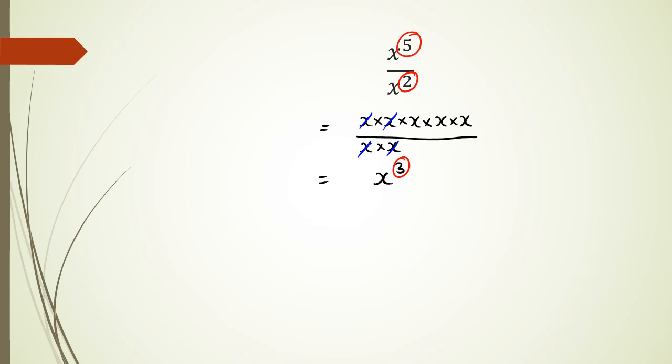So just like last time, do you guys notice a pattern between these three numbers here? Now if you had said 5 minus 2 is 3, then you're absolutely right. So this is the difference between multiplying and dividing: in multiplying you add the powers, in dividing you subtract the powers.